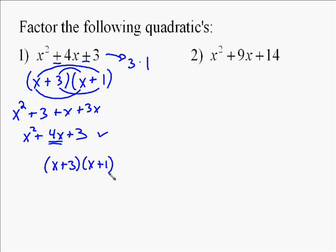There wasn't a lot of trial and error. You really only had one option on this problem. Now on the next one, you have more than one option because you're going to have x times x to get x squared. However, you could get 14 times 1 or 7 times 2 to get 14.